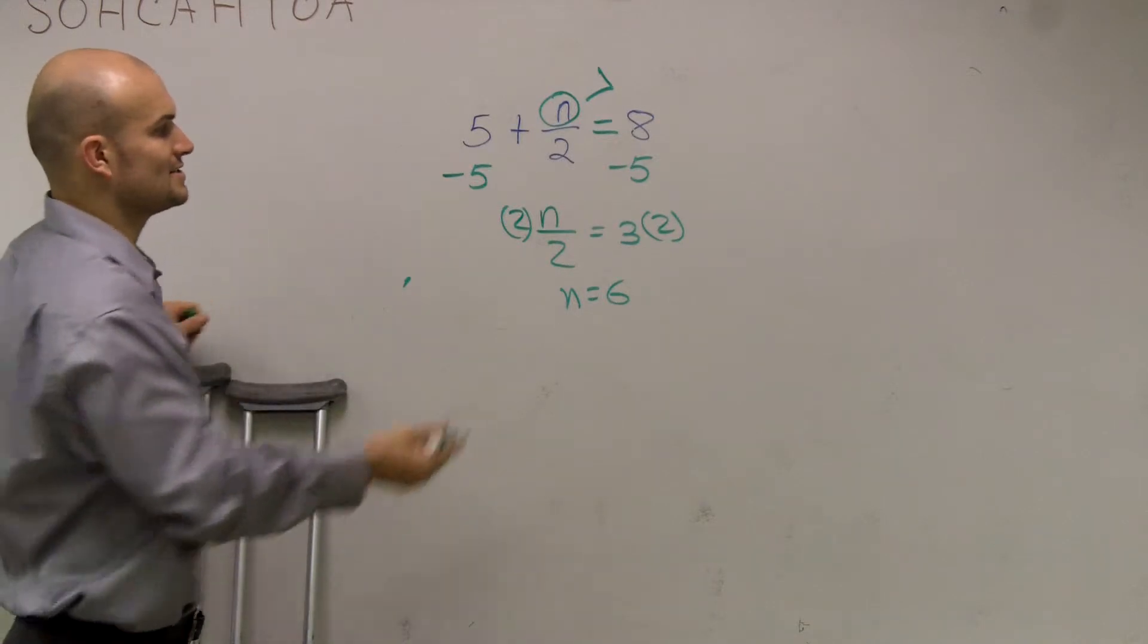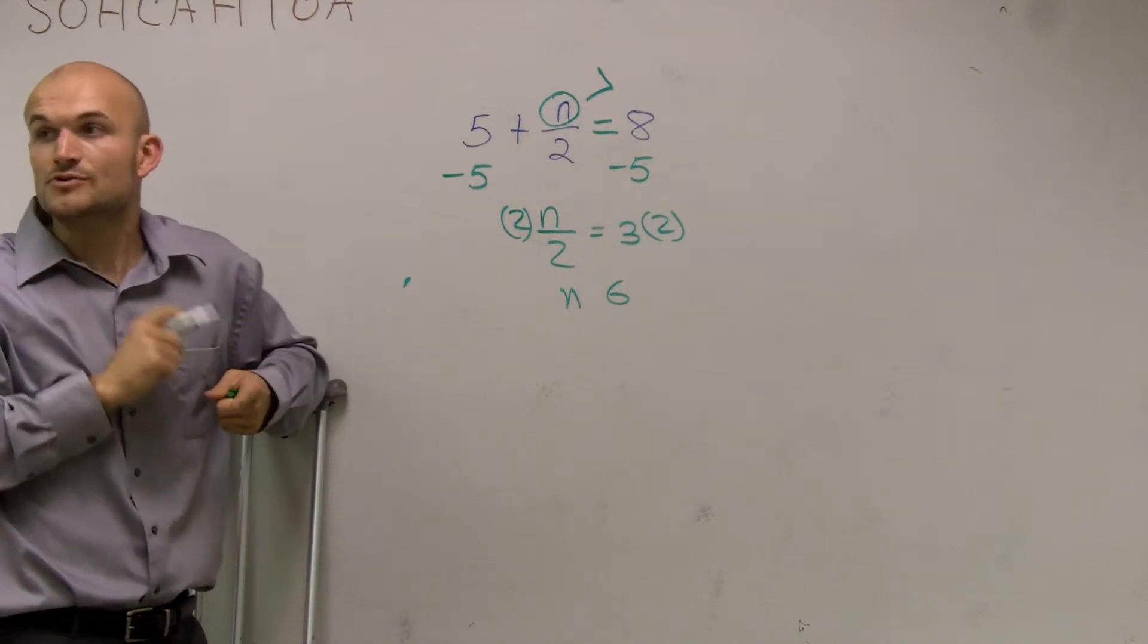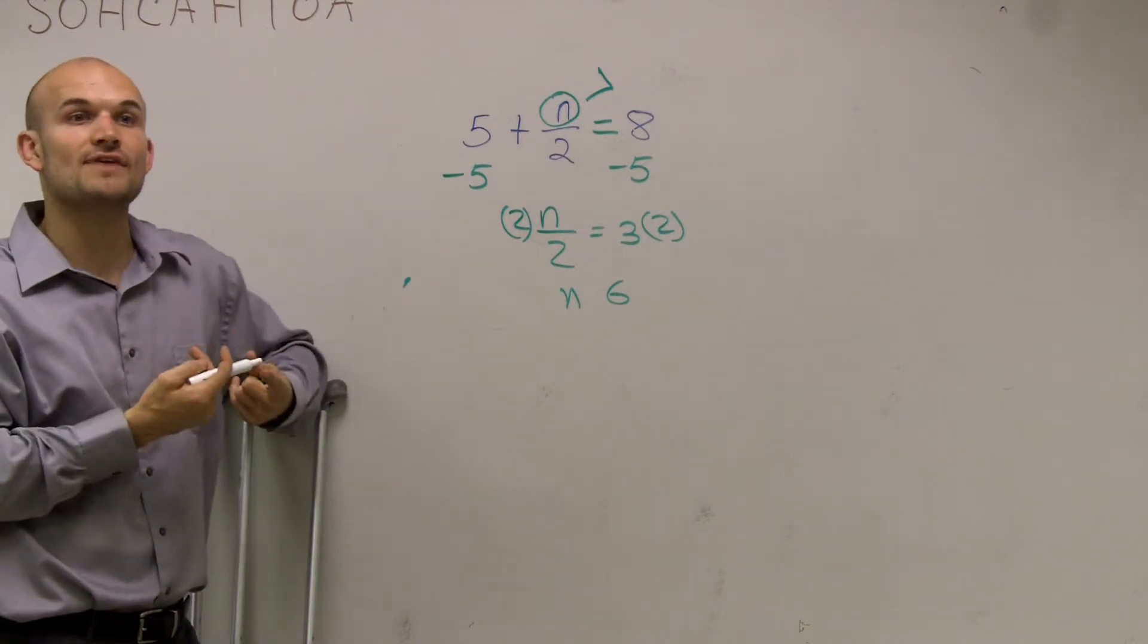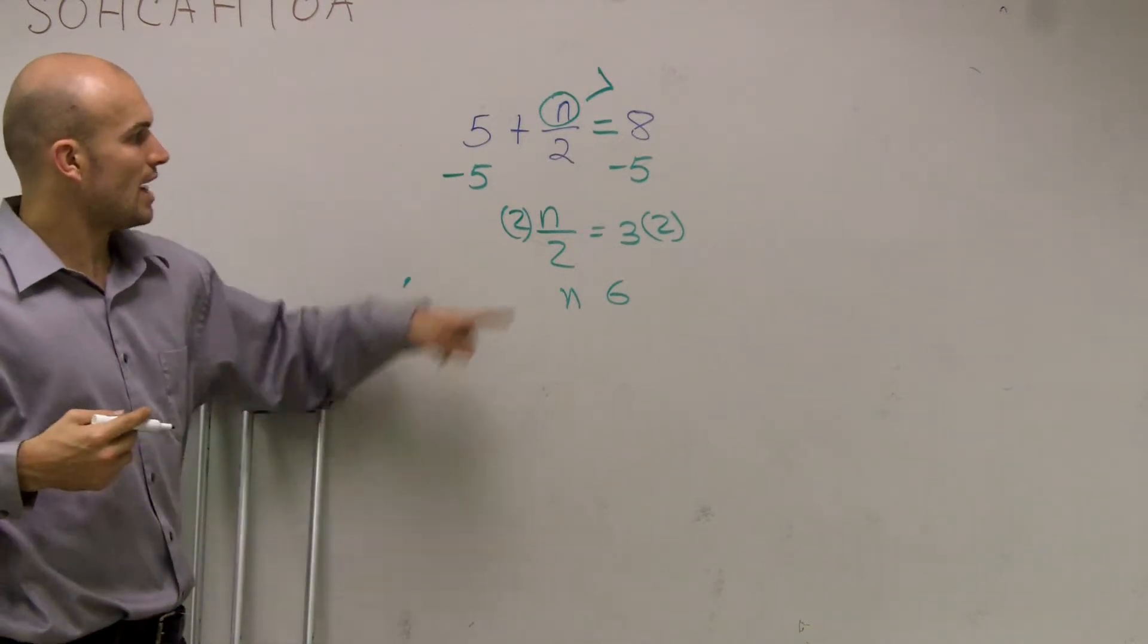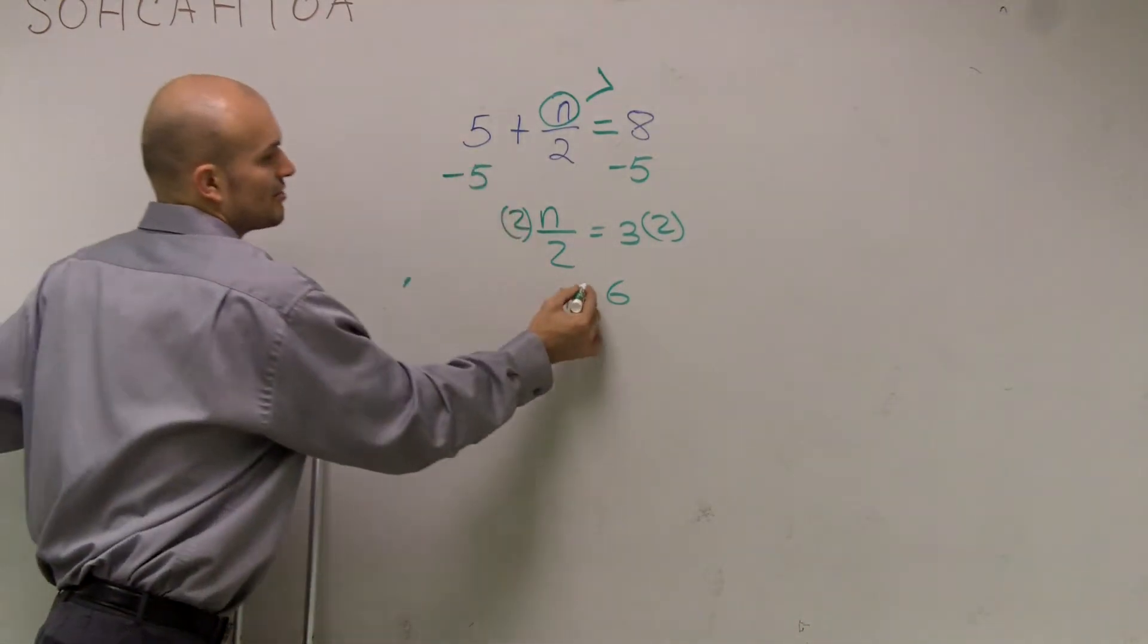So now, I need to replace my sign. And remember, the one key rule that we talked about, it was whenever you multiply or divide by a negative number, you need to flip the sign. Well, I multiply by 2. But since that's a positive 2, my sign is going to remain the same.